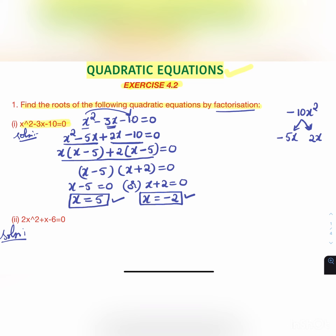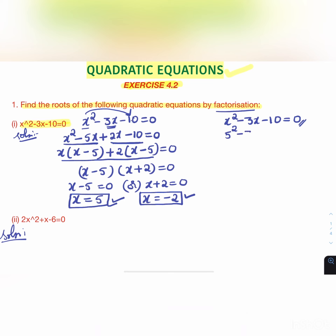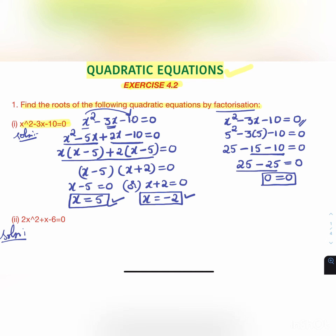Let us verify whether we have done it correctly. We substitute these two values in the given quadratic equation and check if they equal 0. For x = 5: 5² - 3(5) - 10 = 25 - 15 - 10 = 25 - 25 = 0. So LHS equals RHS and our answer is correct.